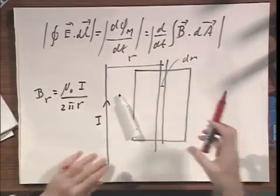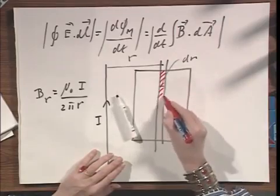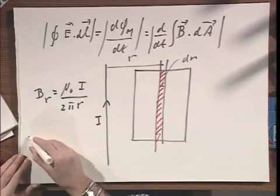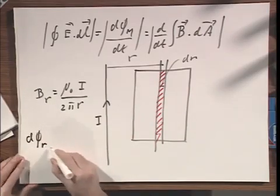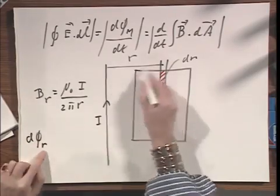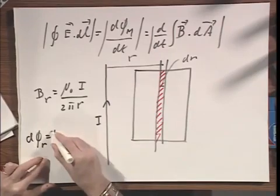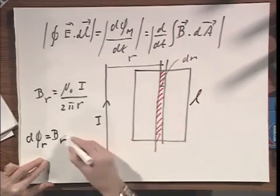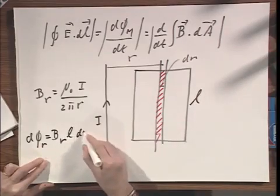So the magnetic flux, the teeny weeny little magnetic flux going through this small narrow ribbon of width dr, that dΦᵣ, that is the magnetic flux at location r, is the magnetic field times the surface area, since this was L, which is L dr.